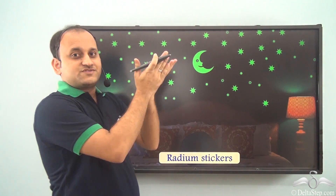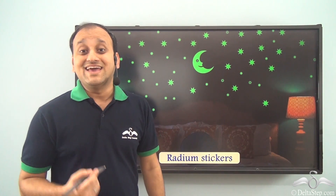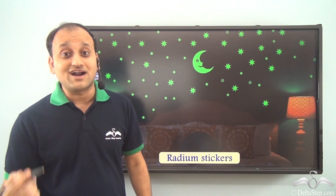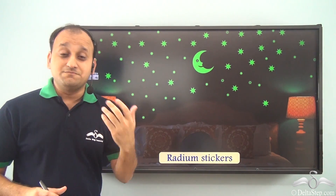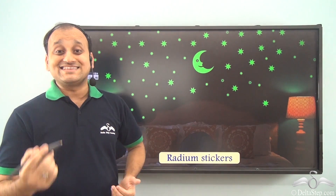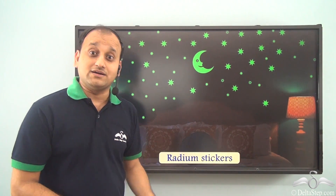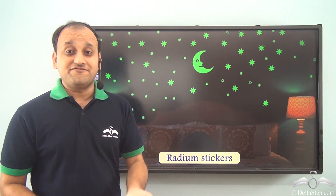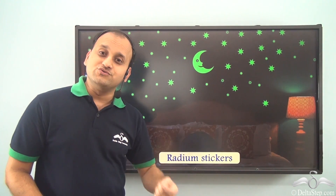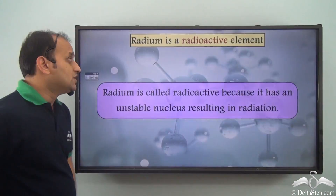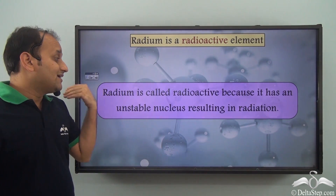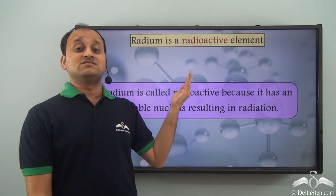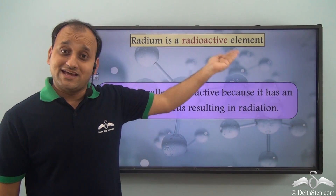Now let's come back to the radium stickers we were talking about. Radium is a radioactive element, so it emits radiation. But the radioactive radiation itself is not visible to our eyes — so why does it glow? The glow is because the radiation coming out of radium excites the air particles around it, and it is the glow of the excited air particles that is seen by our eyes. So what we see as the glow of radium is not exactly the radioactive radiation — it is the glowing air particles excited due to the radiation of the radium. Radium is called radioactive because it has an unstable nucleus resulting in radiation.